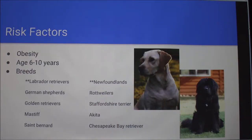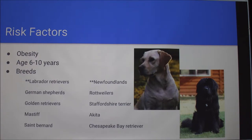Some of the risk factors for the injuries: obviously obesity is pretty important — the extra weight adds extra pressure on the joints. Older dogs are also more susceptible because, as I'll get into, it's more of a degenerative injury rather than a traumatic one like in humans, so it's something that happens more over time. There's also a genetic component — some breeds are more susceptible, especially Labs and Newfoundlands.